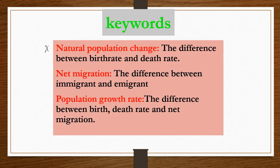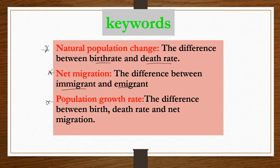Some key terms: natural population growth or change is the difference between birth rate and death rate. Net migration is the difference between immigrants and emigrants. Population growth rate is the difference between birth rate, death rate, and net migration.